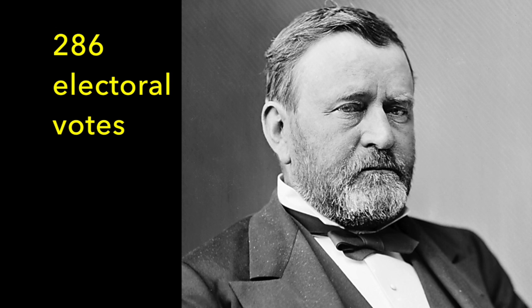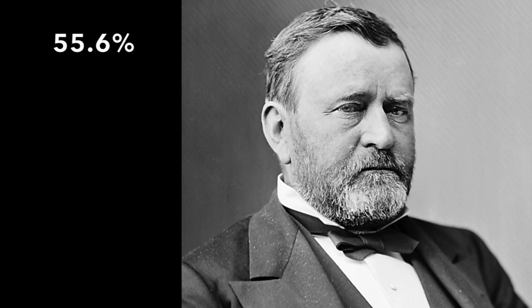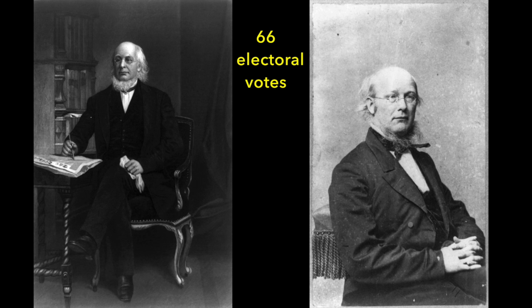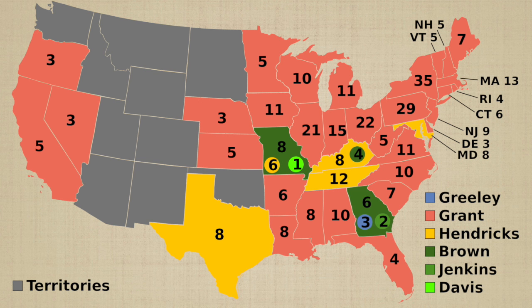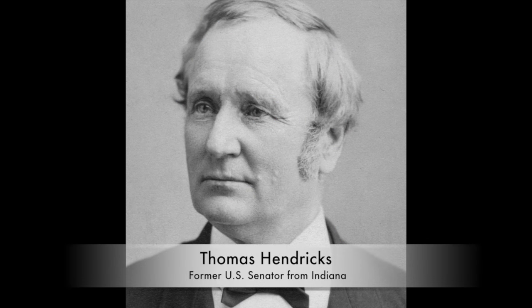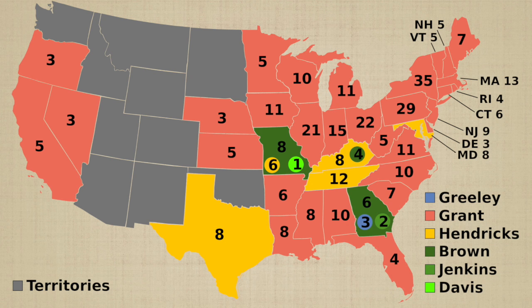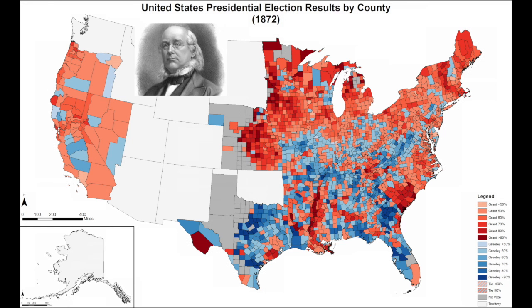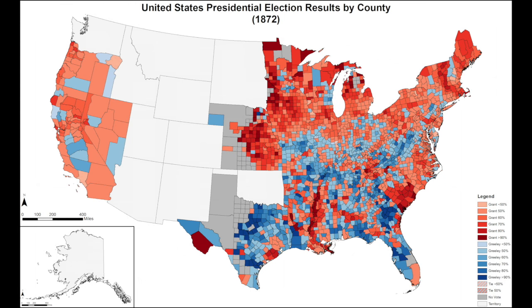And here are the results. Ulysses Grant easily won re-election, receiving 286 electoral votes and 55.6% of the popular vote. Horace Greeley received 43.8% of the popular vote. But he died — before the Electoral College could meet, he died. He would have received 66 electoral votes, but those votes couldn't go to him, though three electors tried. Most of the remaining electoral votes then shifted to Thomas Hendricks, the former senator from Indiana. All the other presidential candidates received less than 1% of the popular vote. Henry Wilson became the 18th vice president in American history. This presidential election remains the only one in which a candidate died during the electoral process.